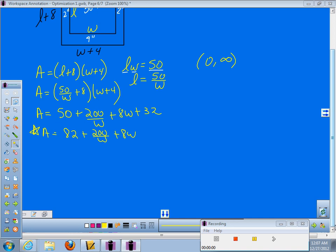Now that we have that done, I'm going to speed up here a little bit. I just have to do the derivative of this. Derivative of 82 is gone. 200 over W is 200 W to the negative 1. So I'll actually get negative 200 W to the negative 2, which I'm dropping back to the bottom, and then plus 8. I need to set this equal to zero and solve it.